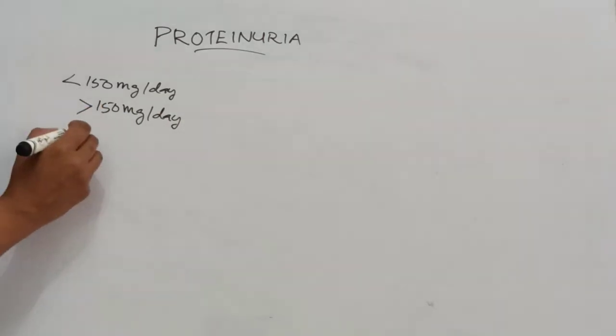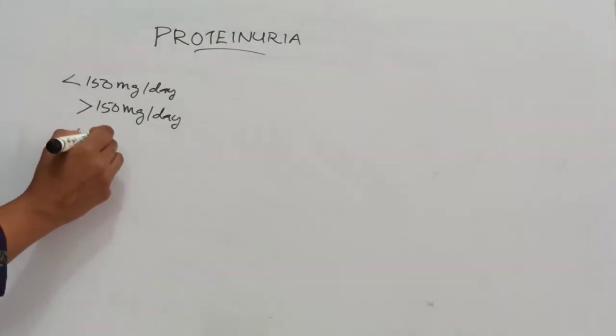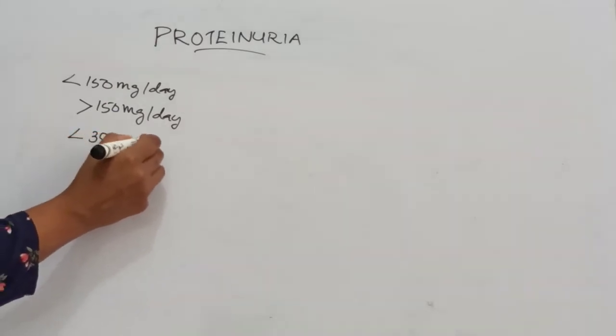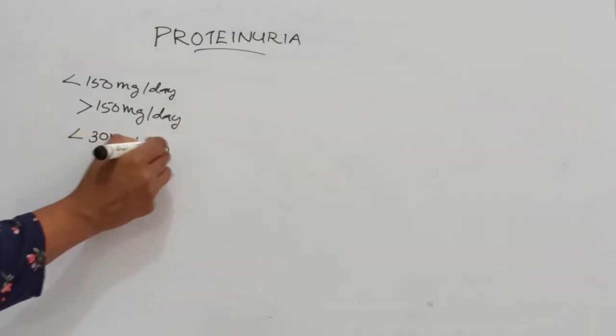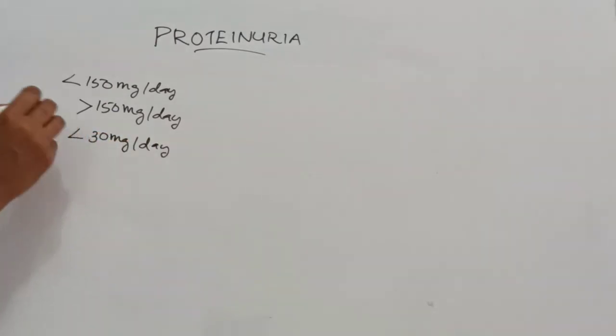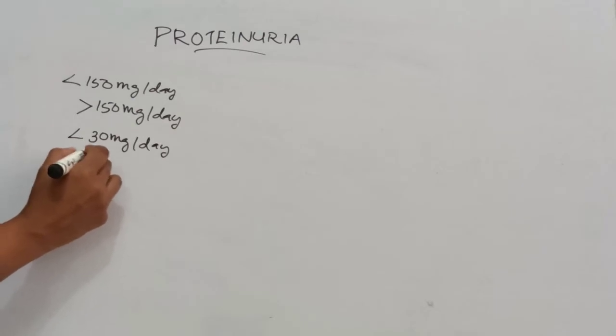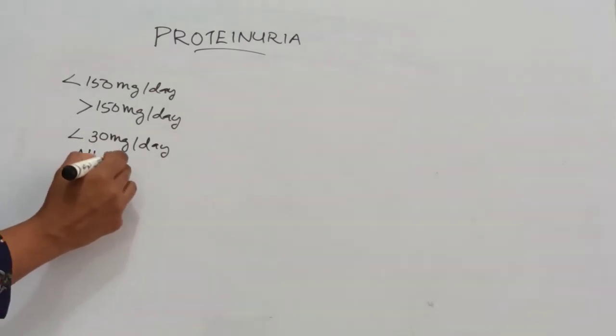The normal albumin excretion should be less than 30 mg per day. When albumin is abnormally present in the urine, it is known as albuminuria.